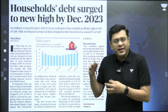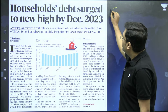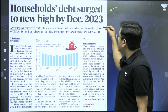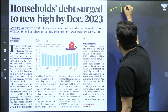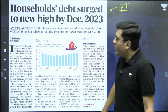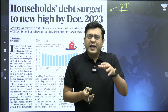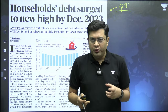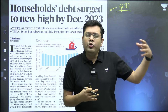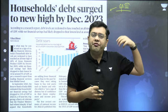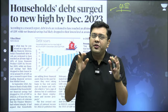Starting with the first topic, which has appeared on the front page of the newspaper: household debt has surged to a new high by December 2023. This is relevant for GS Paper 3. The article tells us that the debt levels of individual households — the amount of money owed to financial institutions, banks, and lenders — has been rising quite significantly.